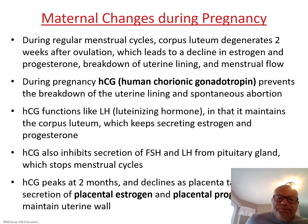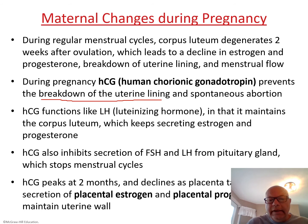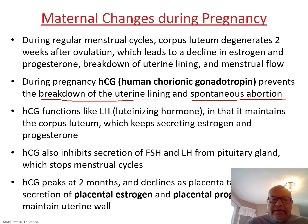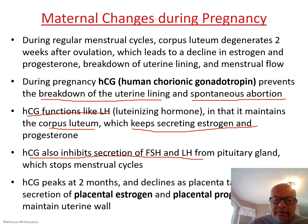Regarding maternal changes: HCG during pregnancy prevents the breakdown of the uterine lining, which in most cases prevents miscarriage. HCG functions like luteinizing hormone in that it maintains the corpus luteum until the placenta is ready, thus secreting estrogen and progesterone. HCG also inhibits secretion of FSH and LH to stop menstrual cycles.